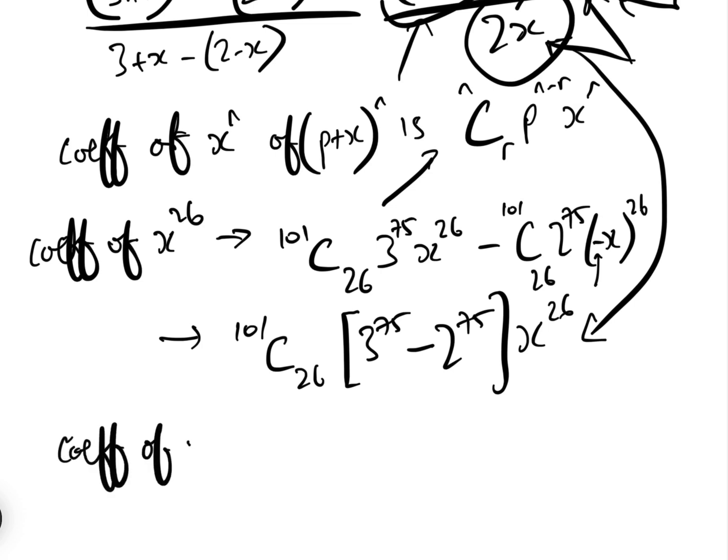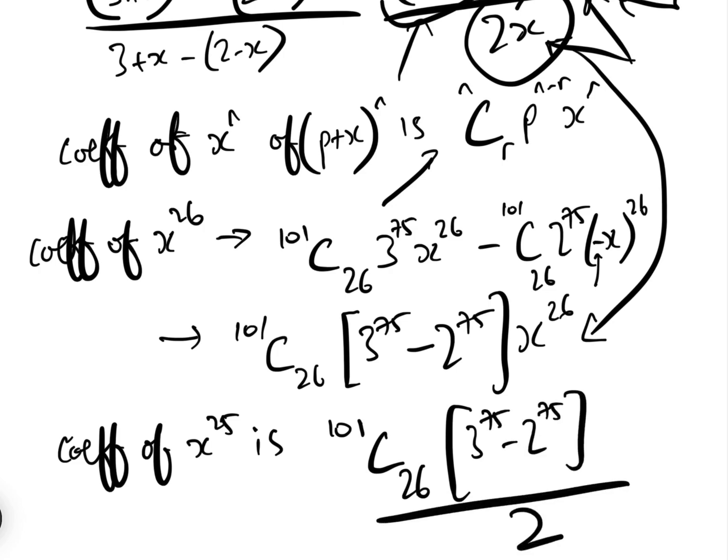So the coefficient of x to the 25 is 101C26, 3 to the 75 minus 2 to the 75, all over 2. And that is the answer to that one.